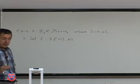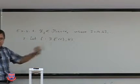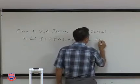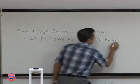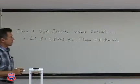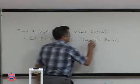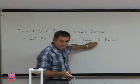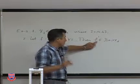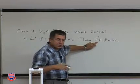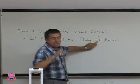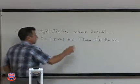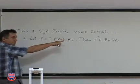Why is the derivative in Baire class 1? By definition of derivative: since F is differentiable everywhere, F'(c) = lim_{n→∞} n·[F(c + 1/n) − F(c)]. The function F is continuous since it is differentiable, so each term n·[F(c + 1/n) − F(c)] is continuous in c. Thus F' is a pointwise limit of continuous functions, placing it in Baire class 1.